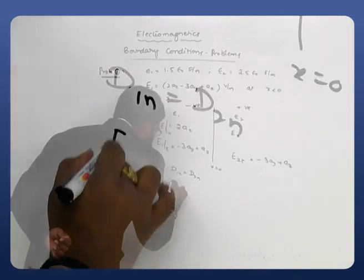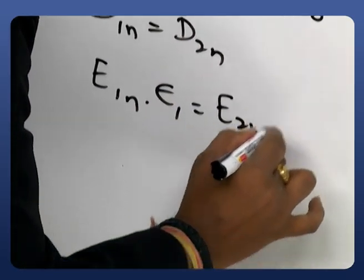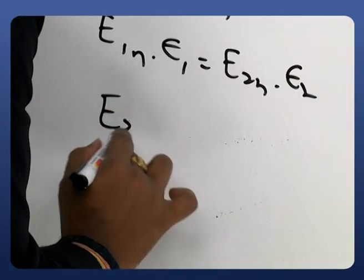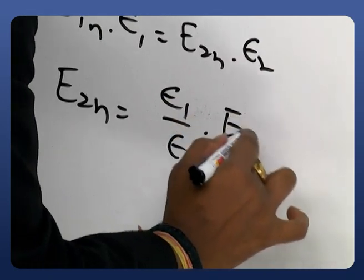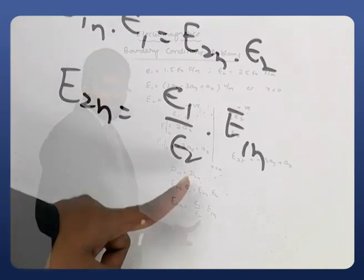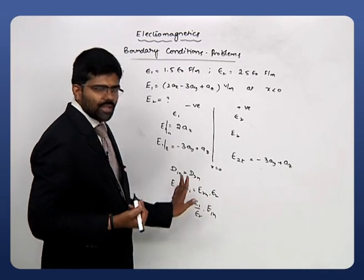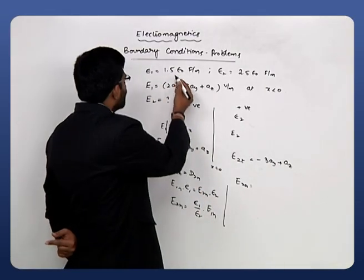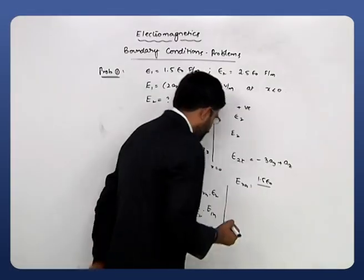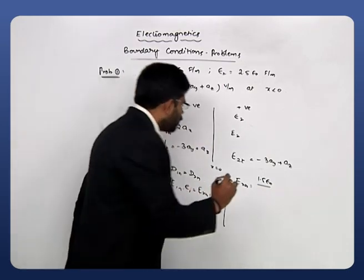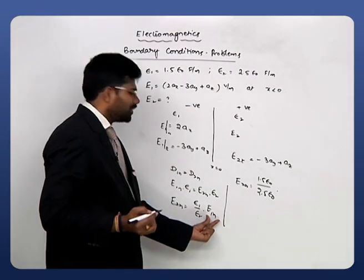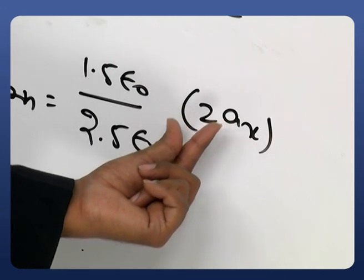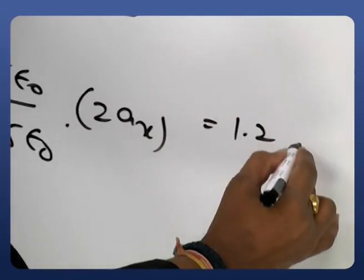D₁n = D₂n gives us ε₁·E₁n = ε₂·E₂n, so E₂n = (ε₁/ε₂)·E₁n. Substituting: ε₁ = 1.5ε₀, ε₂ = 2.5ε₀, and E₁n = 2ax. This gives E₂n = (1.5/2.5)×2ax = (15/25)×2ax = 1.2ax.